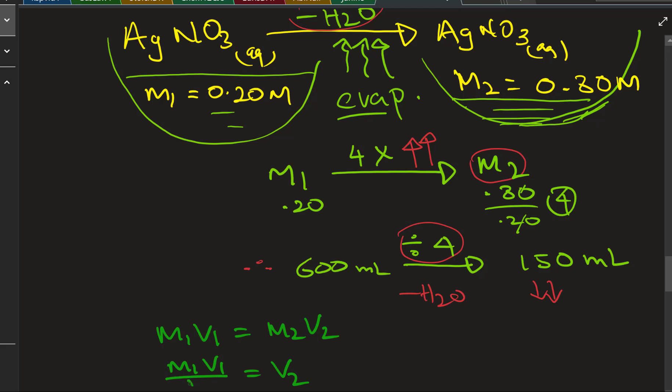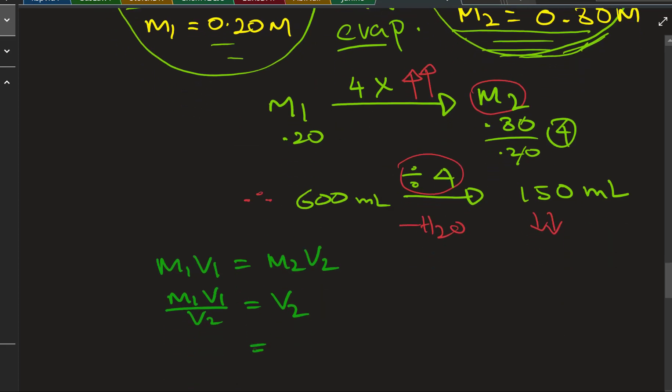M1V1 equals M2V2. We can get the V2. It should be divided by M2. So 0.2 times 600 milliliters divided by not M2, which is 0.8 big M.